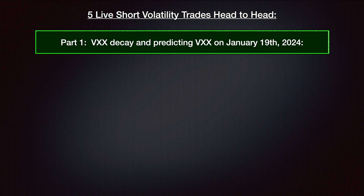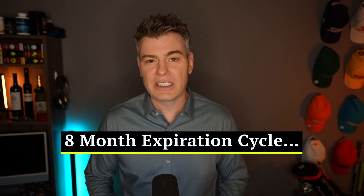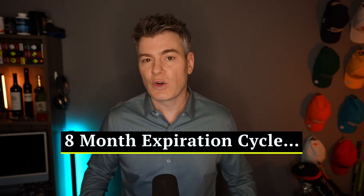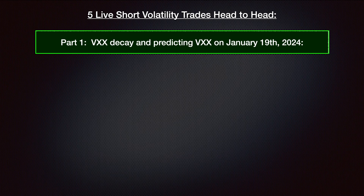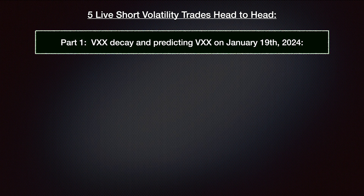Today in part one we're going to go over the VXX long-term decay factor and we're actually going to calculate where the VXX is most likely going to be trading on January 19th, 2024. That's going to be the expiration cycle I choose for all of these trades — something a little further out in time. We're going to nail down a specific target value for the VXX eight months from now.